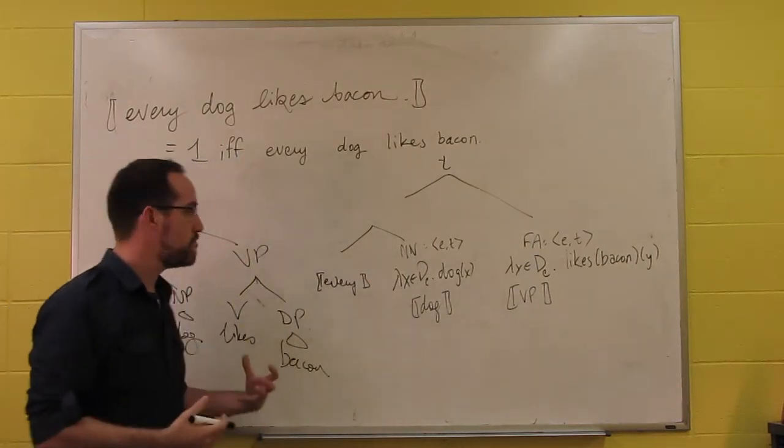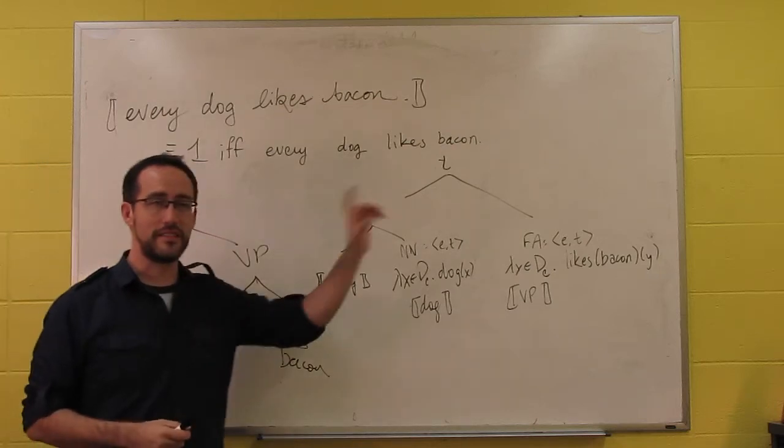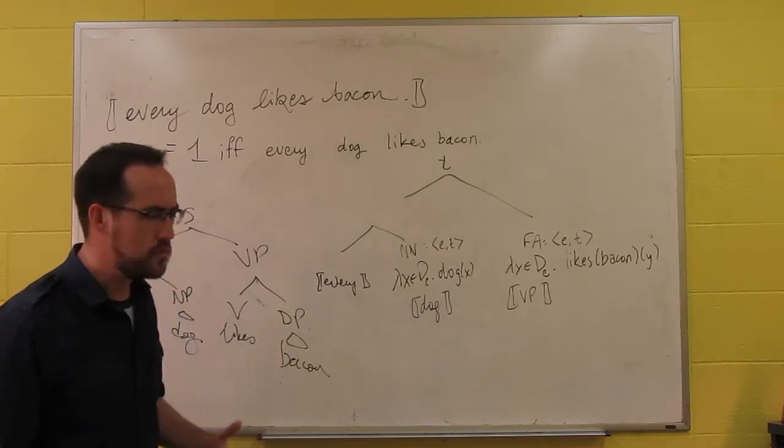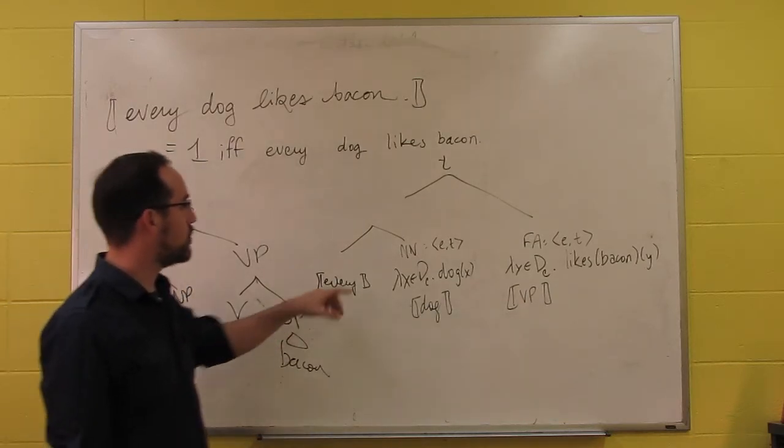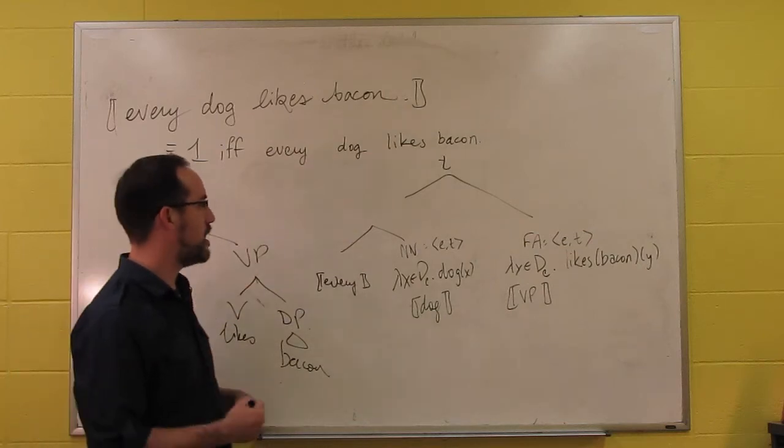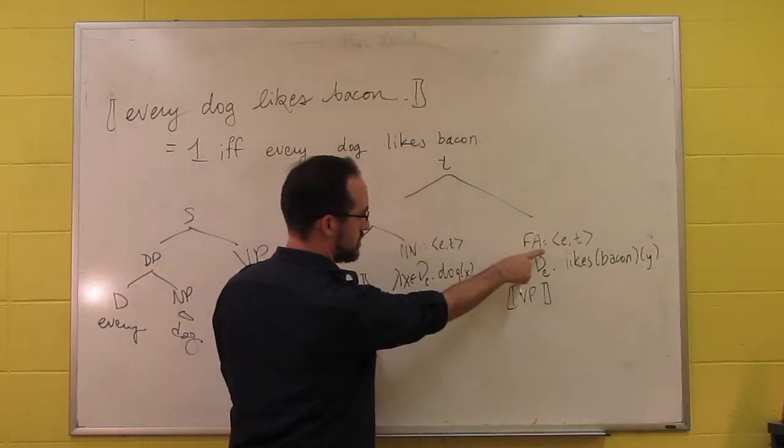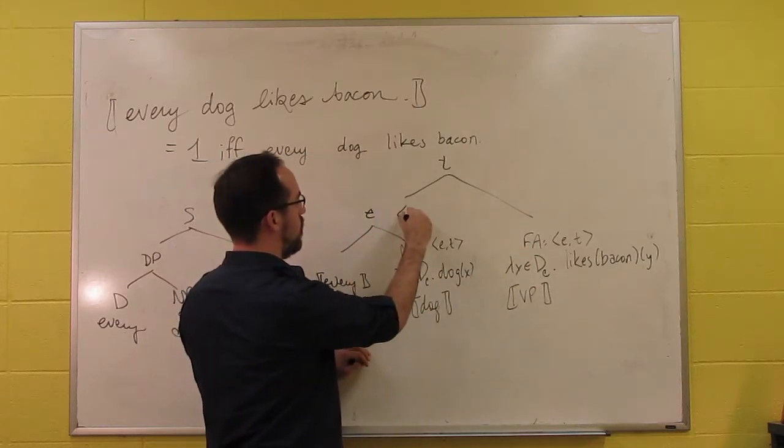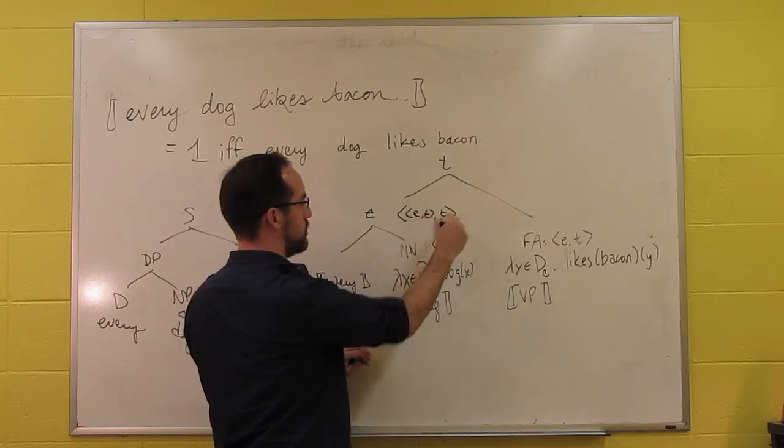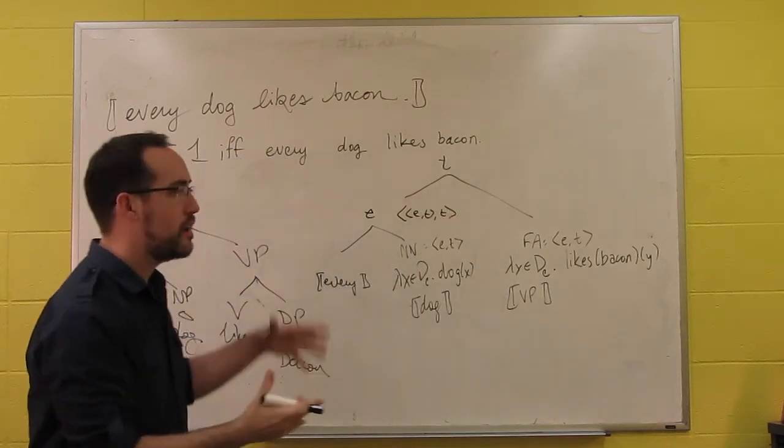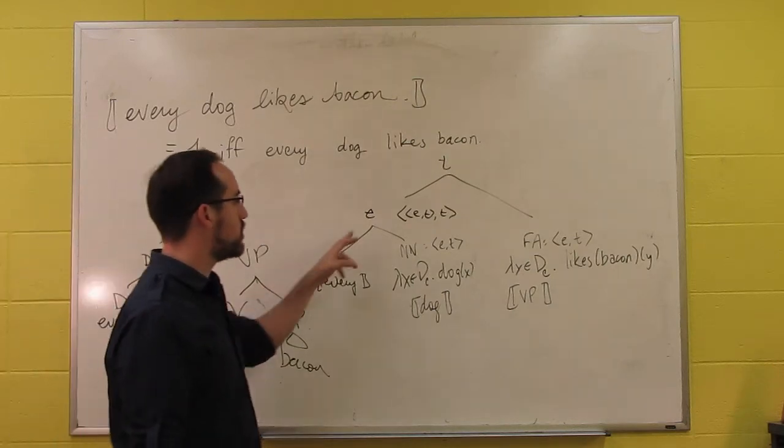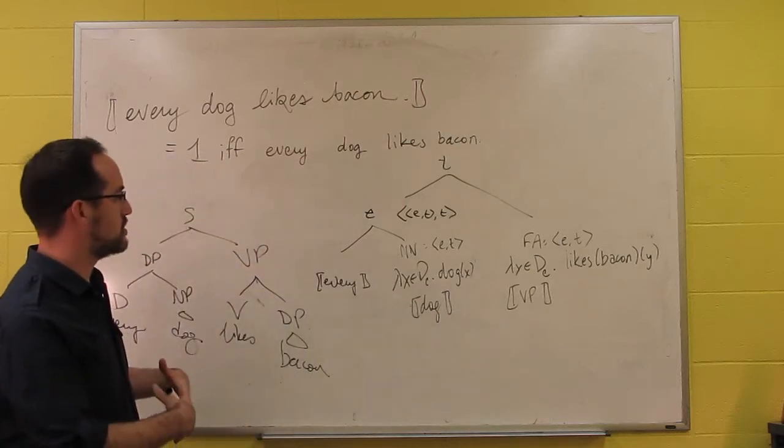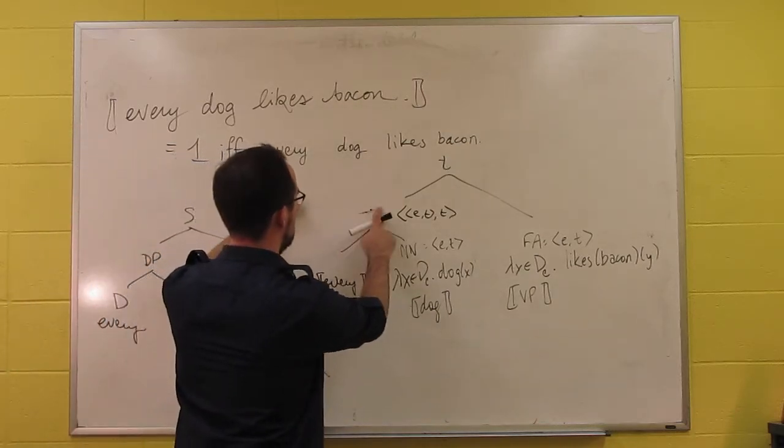If you've seen the lecture on existential quantification, which I recommend, you will have seen that we can go through the types and come back to every. So if this is of type T, this is of type ET, this will either need to be of type E or of type ETT. Either one of those will work through functional application. We know this is not of type E because every dog does not refer to anything. It does not pick out the set of dogs in this case.